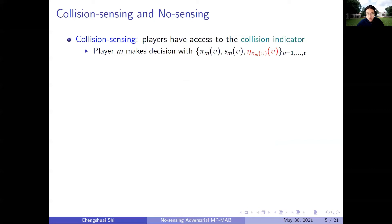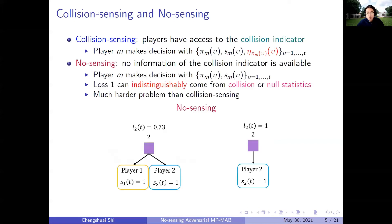With collision introduced, there are two feedback models in the study of multiplayer multi-armed bandits. One is the collision-sensing model. By the name, it means that players have access to the collision indicator, and they can make a decision with that information. The other one is the no-sensing model. In this model, they do not have information of the collision indicator. As a result, as shown in the figure, loss 1 can either be directly generated by the adversary, or it can be the result of a collision.